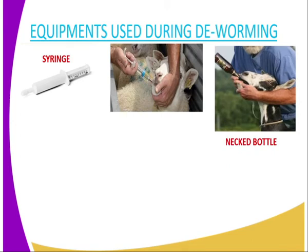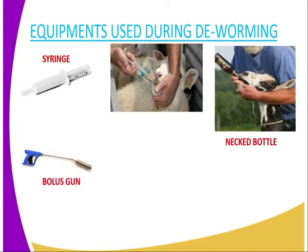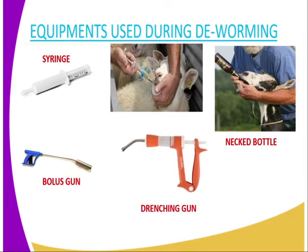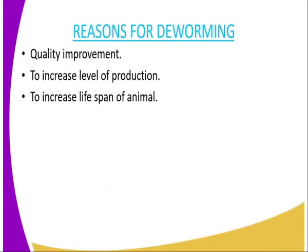Another option is the bolus gun, which is used to shoot solid drug through the mouth. You can also use the drenching gun for introducing liquid drugs through the mouth of an animal.